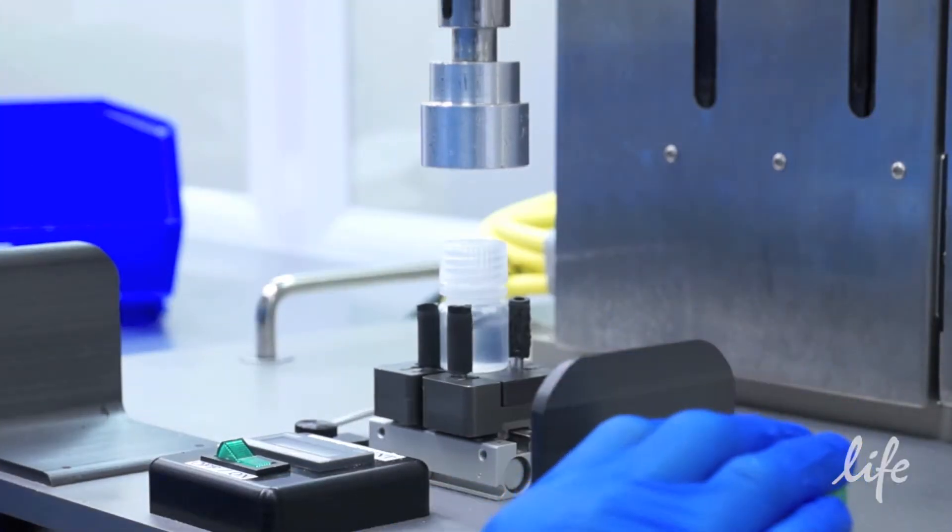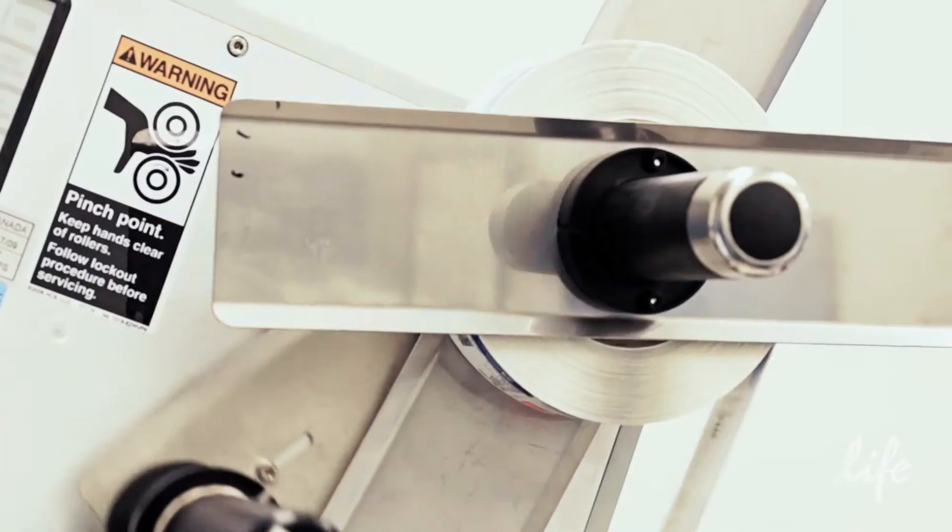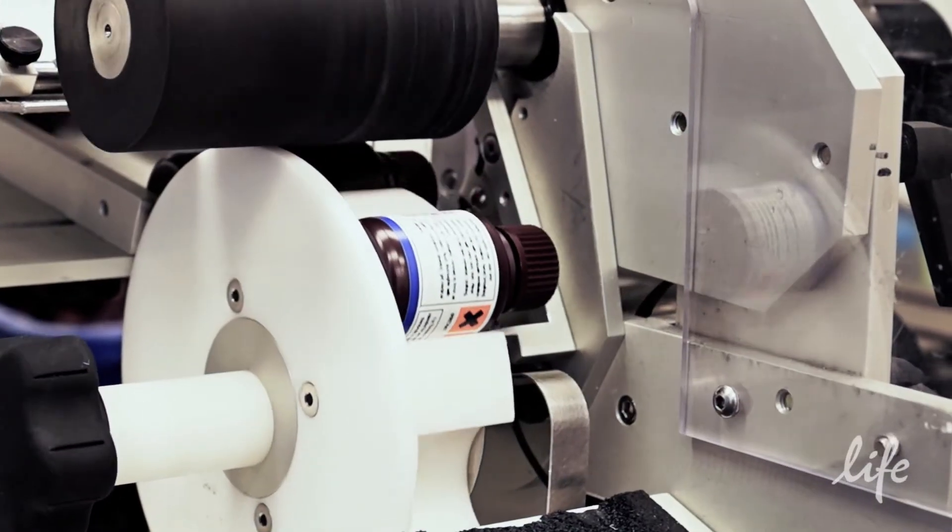This is where the polymer takes the form you use every day: POP4, POP6, and POP7, in any volume you need for your research.